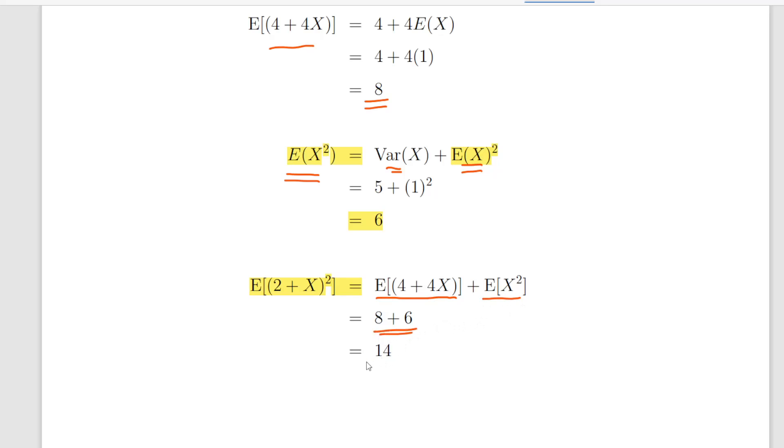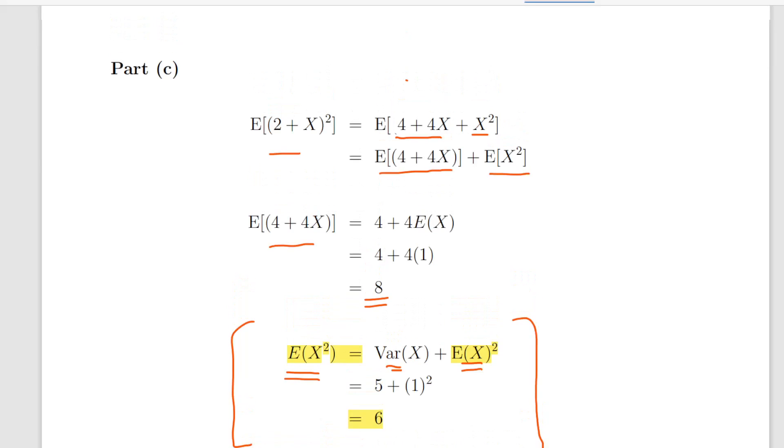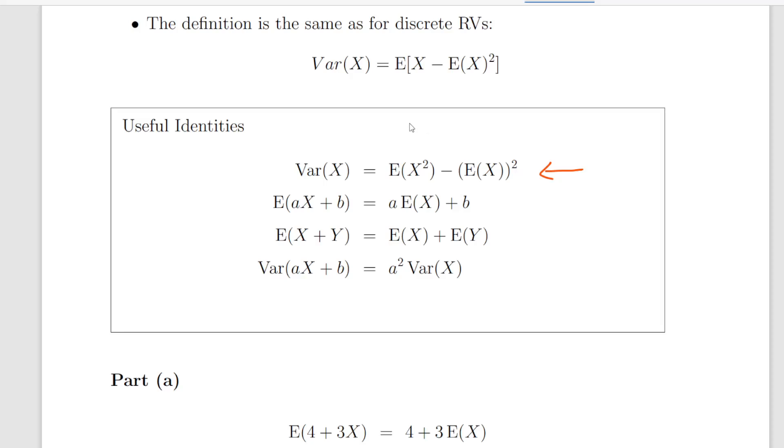This part here was the tricky bit, which requires a little bit of thought about how we would use those identities. This is the key thing here: we've used almost every single one of these identities in this exercise. They come up all the time and you should know them off by heart. They're very useful.